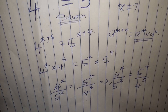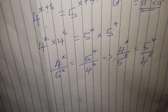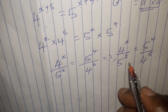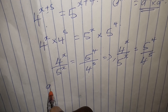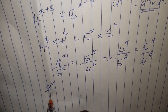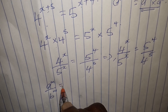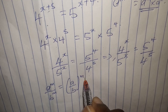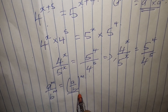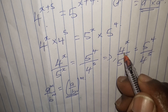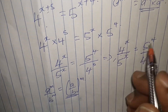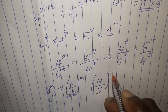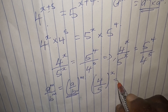Recall from indices: if you are having a to m over b to m, it is also equals to (a over b) to the power of m. Applying this, 4^x over 5^x simply becomes (4 over 5) to the power of x, equals 5 to the power of 4 over 4 to the power of 5.